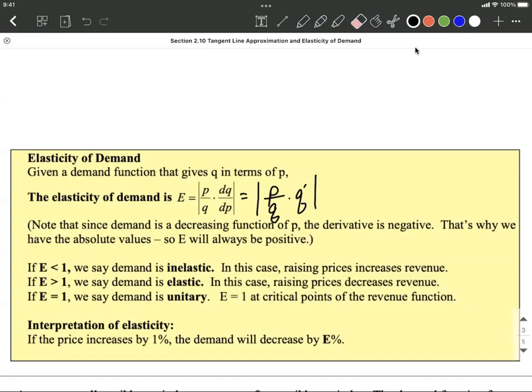But the sweet spot really is if you increase prices by 1%, you only decrease by 1%, then everything stays equivalent. That's where you want to be sitting to maximize your revenue, at unitary or elasticity of demand equaling one.